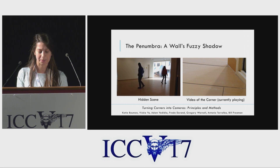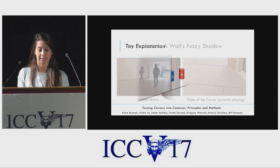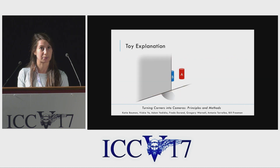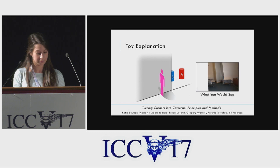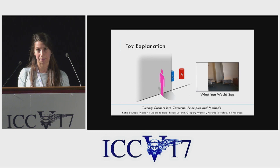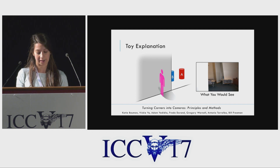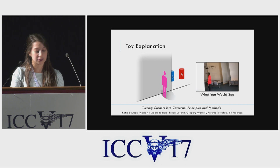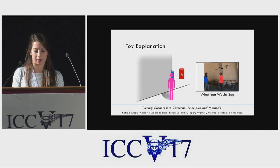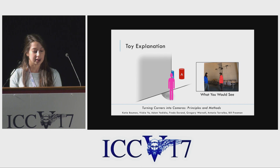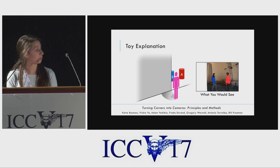To show how to use the penumbra to recover the hidden scene, let's take a look at a simple example. Imagine two people, one red and one blue, hidden behind a wall. If you were standing with your shoulder up against the wall, you wouldn't be able to see any of the scene behind the corner. But if you were to slowly move away from the wall, walking in a circle about the corner, you would see more and more of the scene. Eventually, the hidden scene comes fully into view.